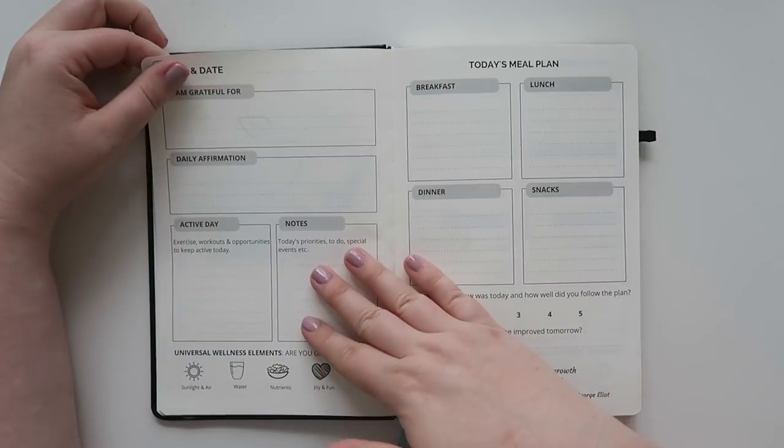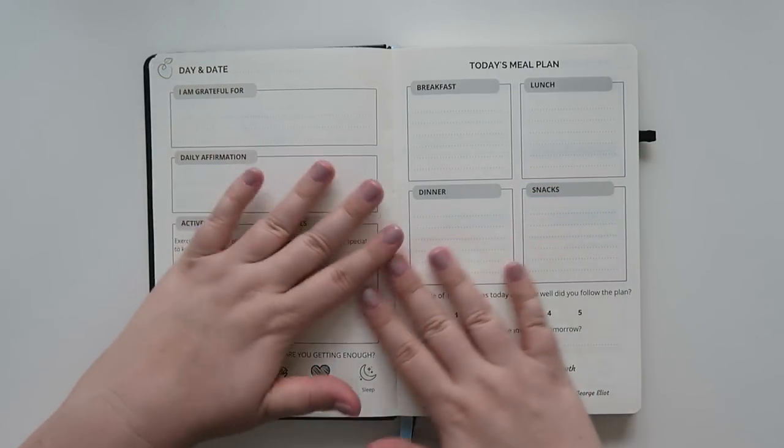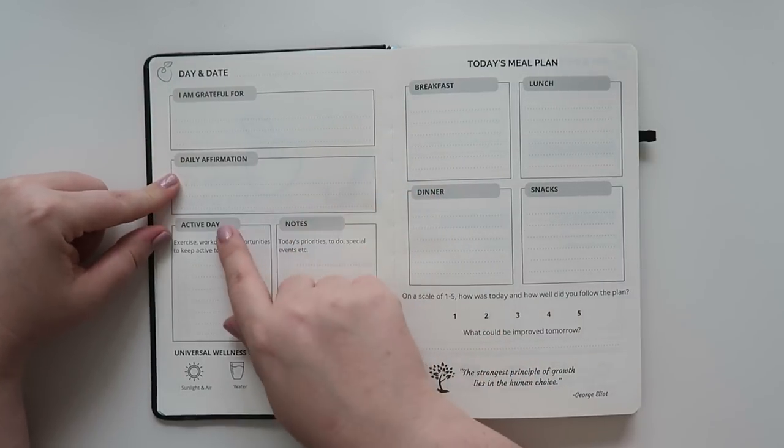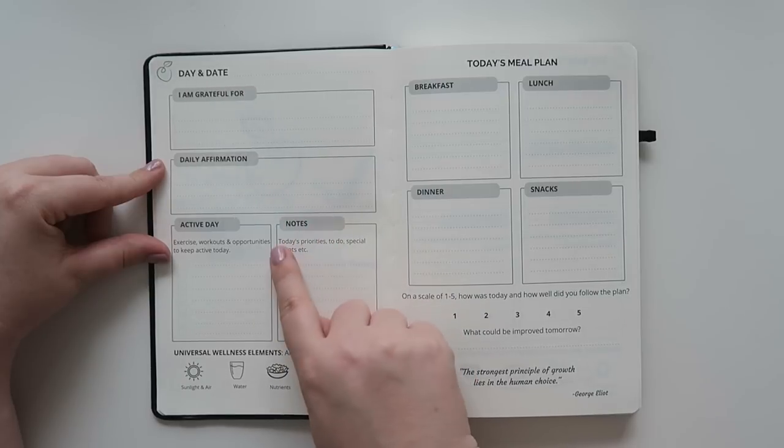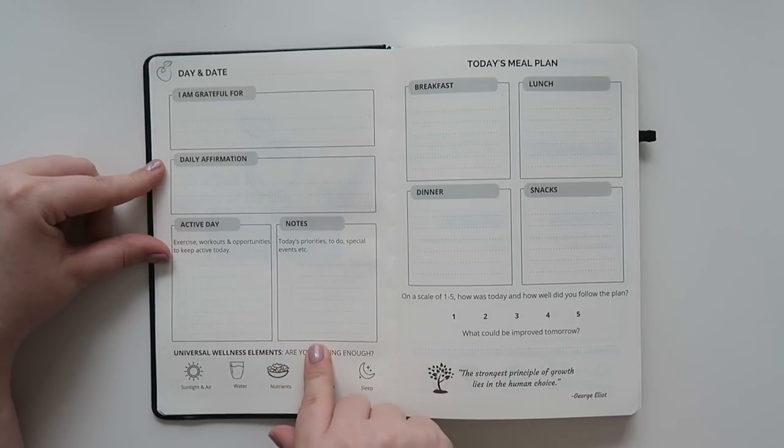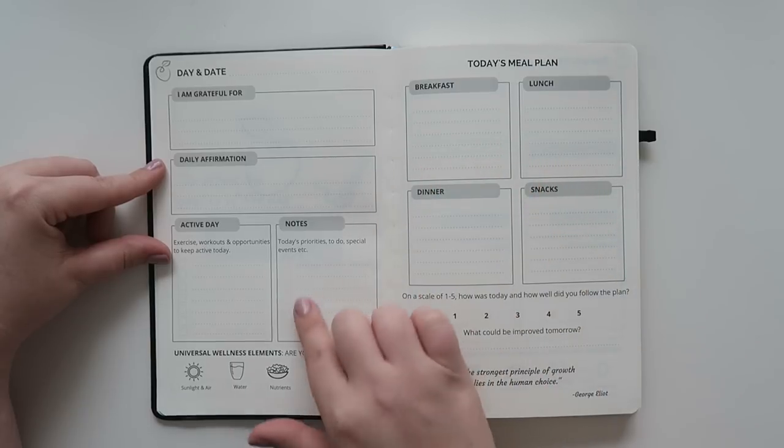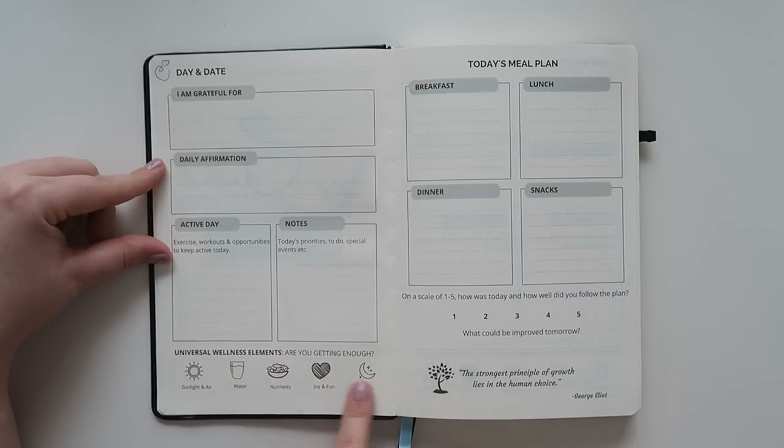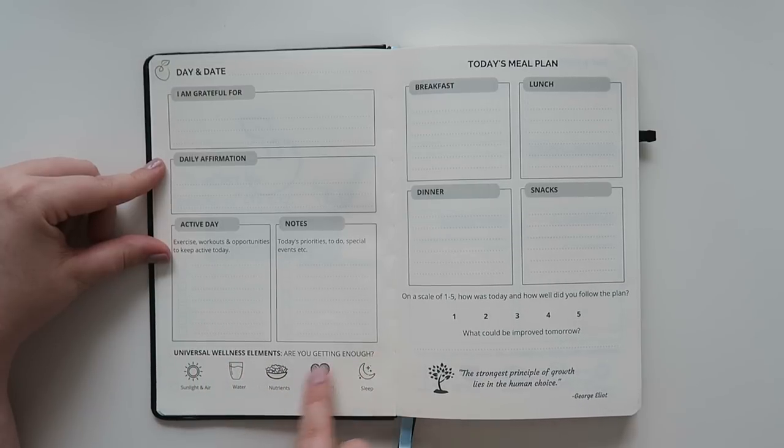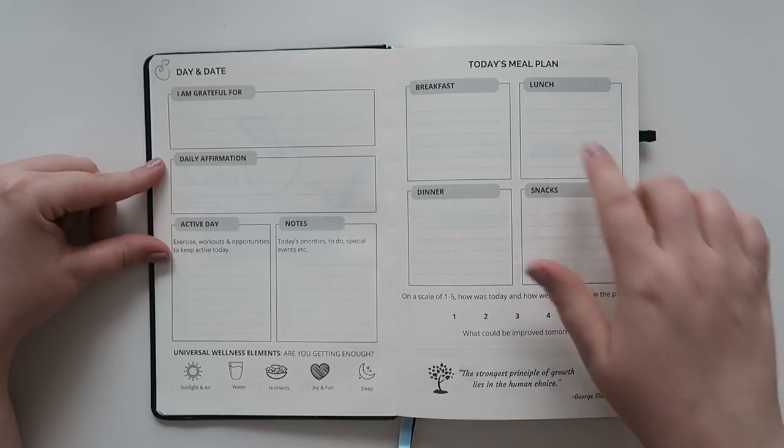And then now we are into the daily planner. Okay. So it's one day on two pages. So you have the day and date, which it's undated. So you can start this at any time. You write what you're grateful for, your daily affirmation, your active day. It says exercise workouts and opportunities to keep active today. And it's got seven different lines with checks and then notes. It says today's priorities, to do's, special events, et cetera. And seven lines as well with little checks. So, I mean, clearly you would use this for like food and activity tracking, but if you had like to do's like, Hey, I need to run to the store. I need to go grocery shopping, or I need to like pick up the dry cleaning. Like you could put that in here. It looks like, and then down at the bottom, it says universal wellness elements. Are you getting enough? And it says air and sunlight, water, nutrients, joy and fun, and sleep. Sleep is something that I definitely struggle with. I don't know if you guys struggle with it out there, but I definitely struggle with sleep. Water, I don't struggle with that at all.